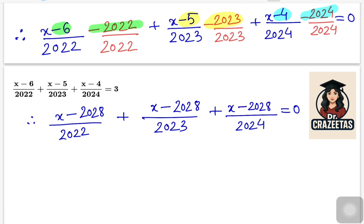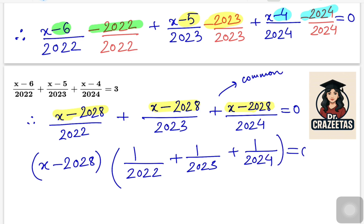I am sure you have found out what is next step. We can see that numerator is seen everywhere in all the fractions. So we are going to take out common: x minus 2028 common, and inside now there will be 1 over 2022 plus 1 over 2023 plus 1 over 2024, equals to 0.